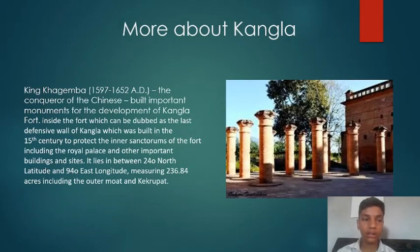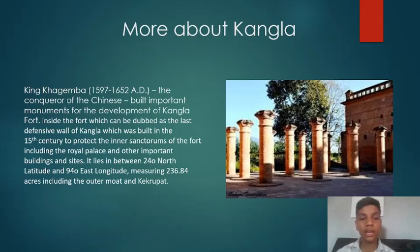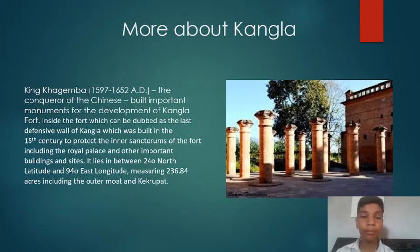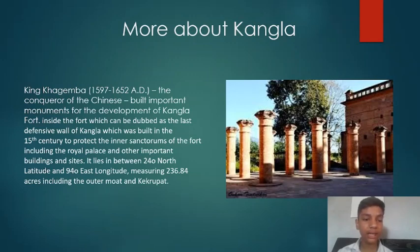King Khambinga conquered the Chinese and built important monuments for the development of Kangla Fort. Inside the fort is a large defensive wall, which was built in the 15th century to protect the inner sanctuums of the fort, including the royal palace and other important buildings and sites.